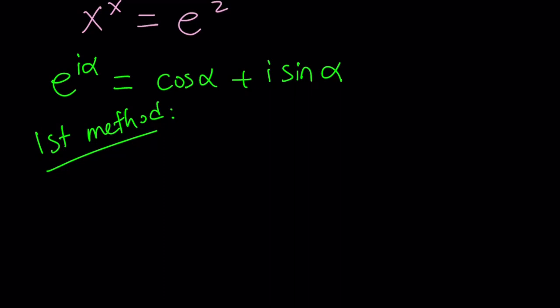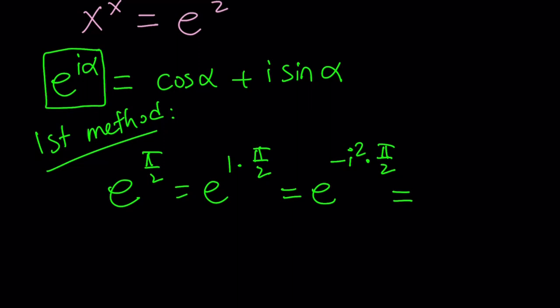So for my first method, I'm going to start off with e to the power pi over 2 and write it as e to the power 1 times pi over 2. And the reason why I separate the 1 is I want to write the 1 in terms of i. So I'm thinking, what is the definition of i? i squared equals negative 1. So 1 is the opposite of negative 1, so it's negative i squared. So I can write this as e to the power negative i squared times pi over 2. Make sense? And then the magic begins.